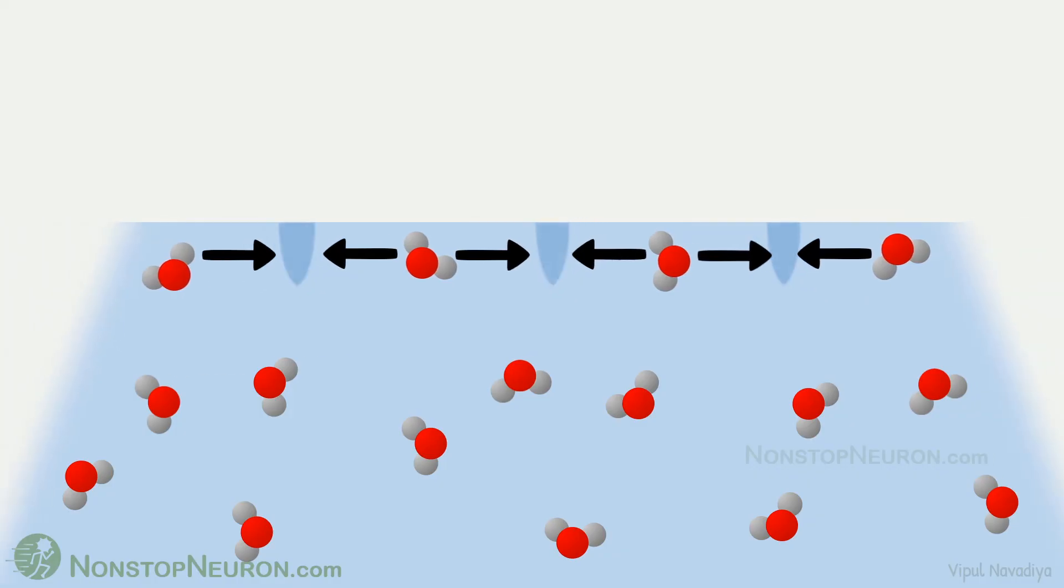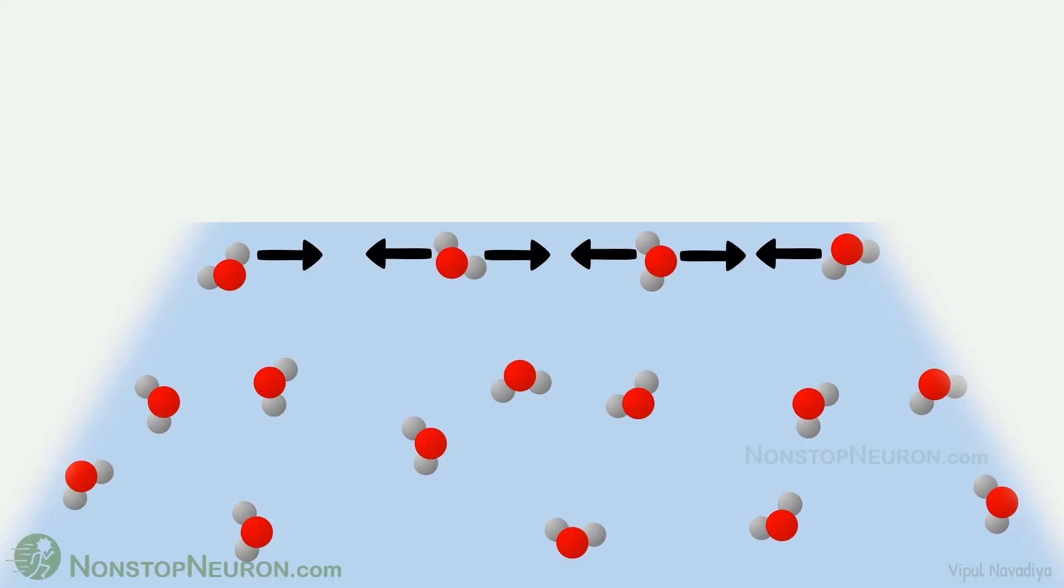As the molecules on the surface fill in these spots, the surface area of the interface decreases. Thus due to surface tension, air water interface always tries to have least surface area possible. So this was about surface tension in general. If all this explanation was overwhelming to you, just remember this. Air water interface is like an elastic band and it always tries to decrease its surface area.